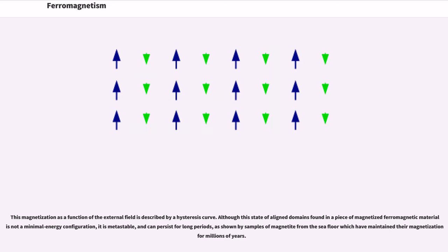This magnetization as a function of the external field is described by a hysteresis curve. Although this state of aligned domains found in a piece of magnetized ferromagnetic material is not a minimal energy configuration, it is metastable, and can persist for long periods, as shown by samples of magnetite from the seafloor which have maintained their magnetization for millions of years.